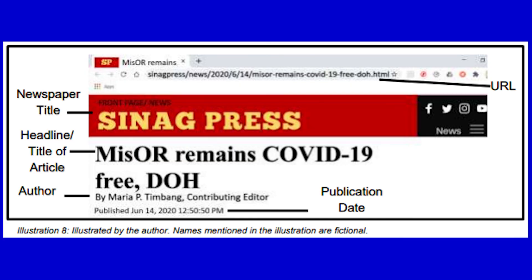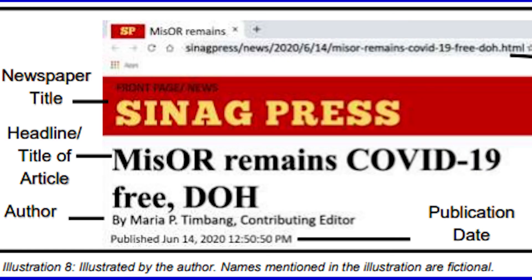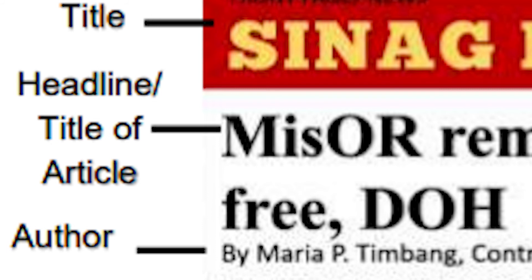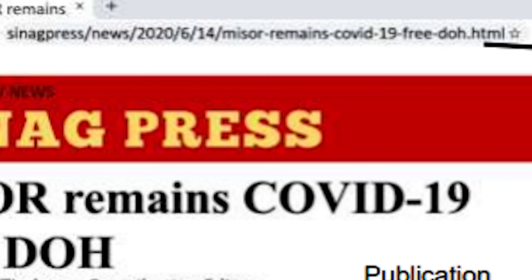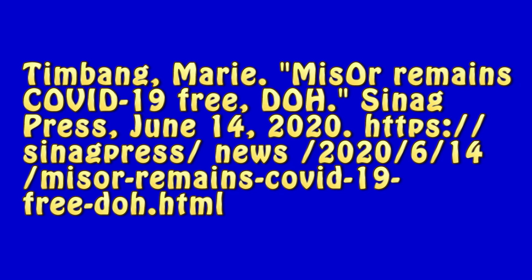For the online newspaper example: the newspaper title is Sinag Press. The headline or title of the article is 'Miss or Remains COVID-19 Free.' The author is Maria P. Timbang, Contributing Editor. The publication date and URL follow. The entry reads: Timbang, Marie, 'Miss or Remain COVID-19 Free,' Sinag Press, June 14, 2020, then the URL.